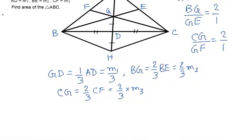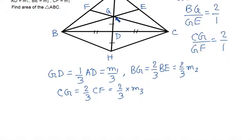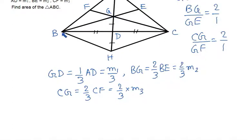Now, in the construction, I have extended GD up to H so that GD equals DH. Then H is joined with B and C. In quadrilateral BGCH, the diagonals GH and BC bisect each other at D, since GD = DH and BD = DC. This confirms that BGCH is a parallelogram, so BG = HC and CG = BH.